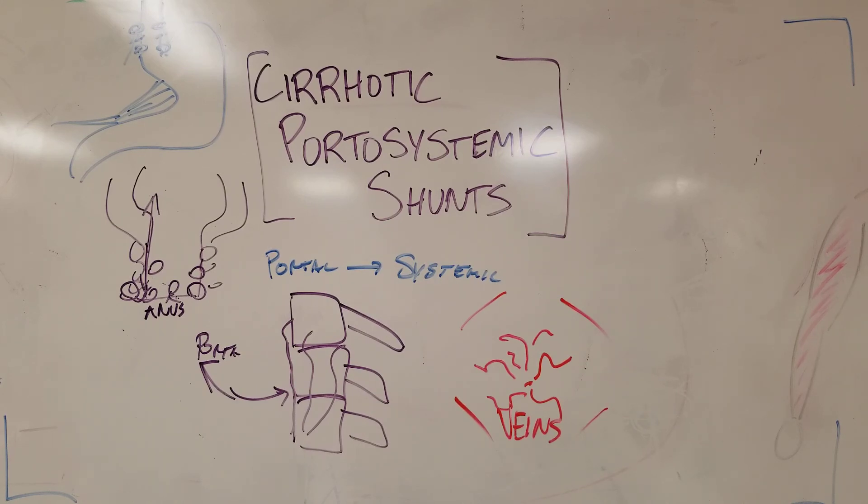Obviously a big deal. These are the four most common natural portosystemic shunts that you can see in a patient that then get exploited in cirrhosis to get blood from the portal system back to the systemic system, avoiding the high-pressure liver. Thanks.